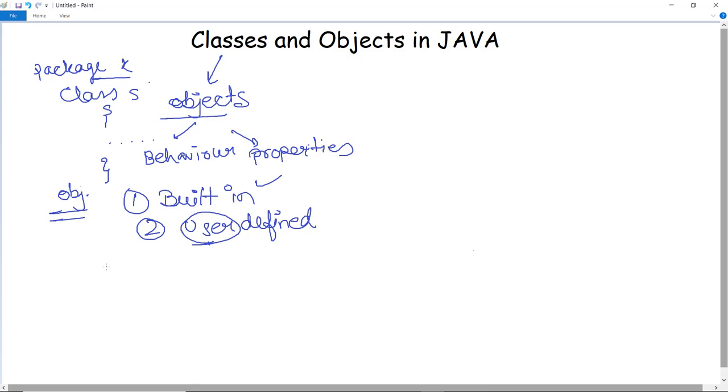Now how can we create a class? The basic syntax for the creation of the class is you have to mention the access specifier. Then you have to use the keyword class and then of course the name which you want to give your class. This is how it is done.